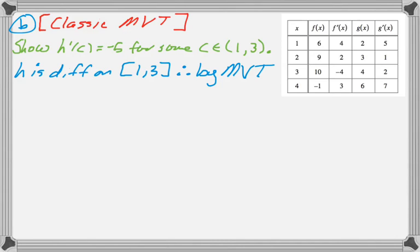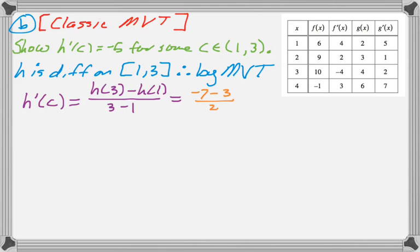So, by the mean value theorem, h prime of c equals h of 3 minus h of 1 over 3 minus 1. I already calculated h of 3 and h of 1 in part a, so I'm just going to copy those values. So, h of 3 was negative 7, and h of 1 was 3 over 2, and then this works out to negative 5, as you would kind of expect based on the question. And this was guaranteed for some value of c between 1 and 3 by the mean value theorem, and that's all there is to that.